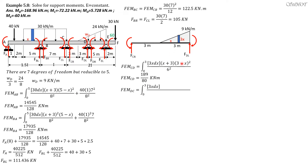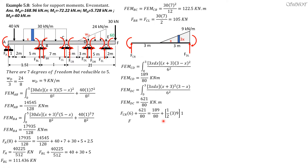Fixed end moment CD equals 189 over 80. Fixed end moment DC uses the same integral with (x plus 3) squared times (3 minus x) over 6 squared, giving 621 over 80 kilonewton meter. From summation of moments at D equals zero: FCR times 6 plus 621 over 80 equals 189 over 80 plus one half of 3 times 9 times 1, giving FCR equals 1.35 kilonewtons. From summation of vertical forces, FDL equals 12.15 kilonewtons.